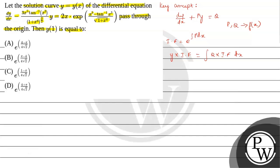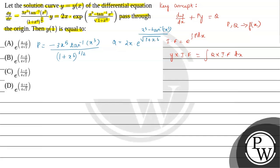Let us use the key concept and solve the problem. From the question we can say that P equals minus (3x⁵ · tan⁻¹(x³)) / (1 + x⁶)^(3/2). And Q equals 2x · exp(x³ - tan⁻¹(x³)) / √(1 + x⁶). Now let us take the substitution: let t = tan⁻¹(x³), so dt = 1/(1 + x⁶) · 3x² dx.